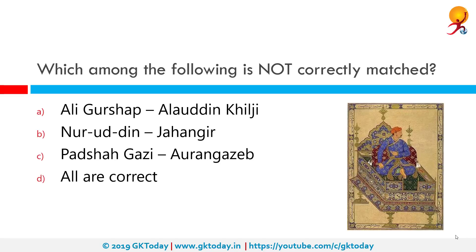Which among the following is not correctly matched? In these options, Patshah Ghazi matched with Aurangzeb is the incorrect match. In fact, Patshah Ghazi was the title assumed by Jahangir.